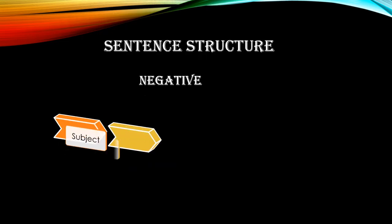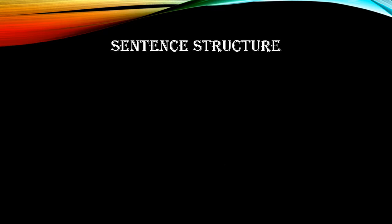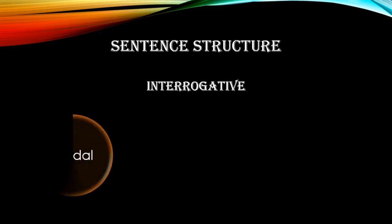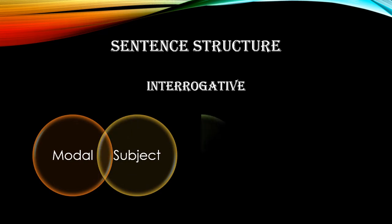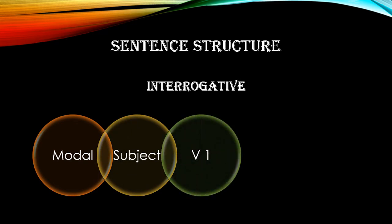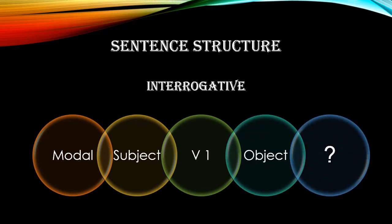For negative sentences, the structure is: Subject + Modal + Not + Verb first form + Object. For interrogative sentences, we need to shift the helping verb before the subject, so the structure becomes: Modal + Subject + Main verb first form + Object + Question mark. These were the sentence structures using a modal verb.